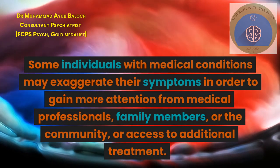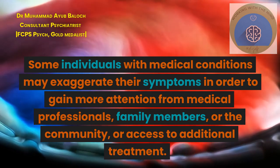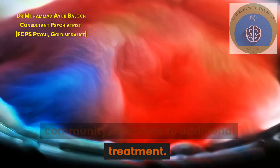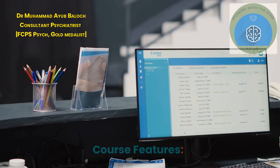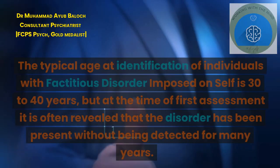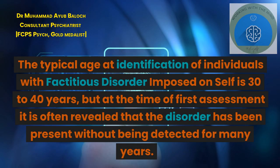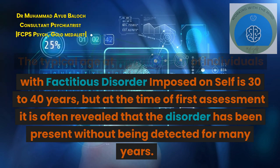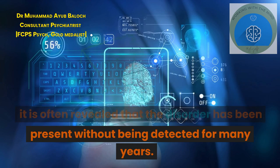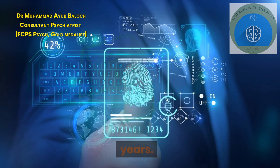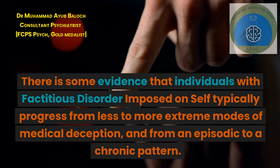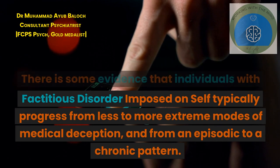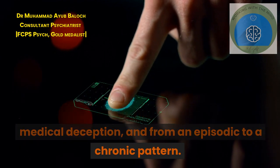Some individuals with medical conditions may exaggerate their symptoms in order to gain more attention from medical professionals, family members, or the community, or access to additional treatment. The typical age at identification of individuals with factitious disorder imposed on self is 30 to 40 years, but at the time of first assessment it is often revealed that the disorder has been present without being detected for many years. There is some evidence that individuals typically progress from less to more extreme modes of medical deception, and from an episodic to a chronic pattern.